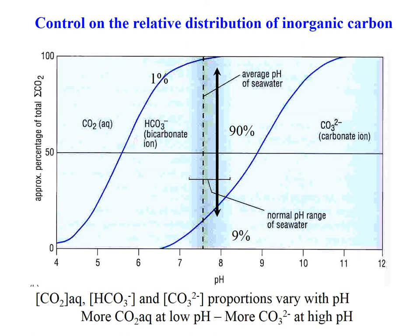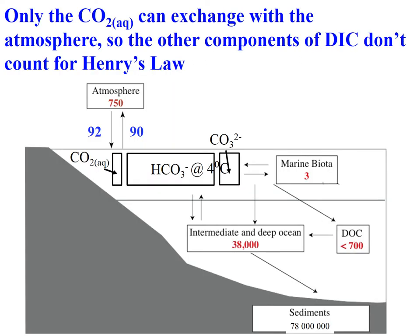Having all of these species buffers any change. In the ocean, because we have three species of dissolved inorganic carbon and only the CO2 species can interact with the atmosphere, we've got an enormous store of bicarbonate and carbonate that can't interact with the atmosphere. This allows us to store more and more carbon in the ocean.